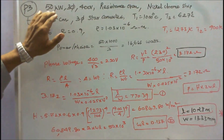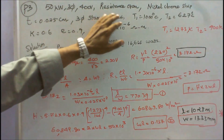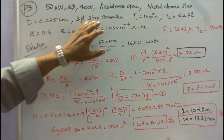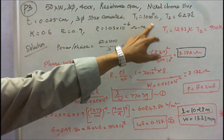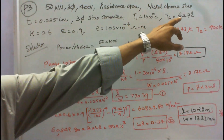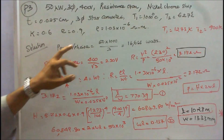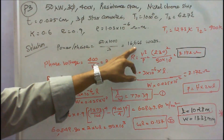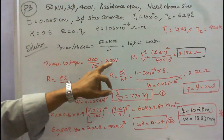In this problem, input power is 50kW, three-phase 400V resistance oven, nickel-chrome strip, thickness is 0.025 cm, three-phase star-connected. T1 equals 1000°C, so T1 equals 1000 plus 273 equals 1273 Kelvin. T2 equals 627°C, so T2 equals 627 plus 273 equals 900 Kelvin. Power per phase equals 50×10³ divided by 3 equals 16,667 watts. Phase voltage equals 400 divided by √3 equals 230 volts.